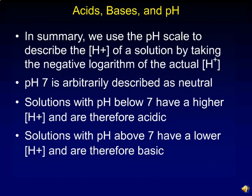So, to summarize, the pH scale describes the hydrogen ion concentration of a solution in moles per liter by taking the negative logarithm of the actual hydrogen ion concentration. pH 7 is arbitrarily described as neutral. Solutions with pH below 7 have a higher hydrogen ion concentration and are therefore acidic. Solutions with a pH above 7 have a lower hydrogen ion concentration and are therefore basic.